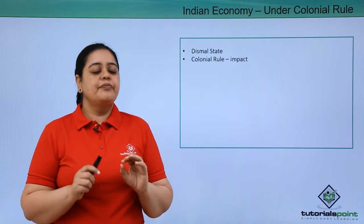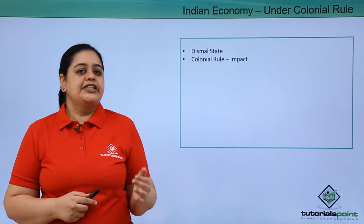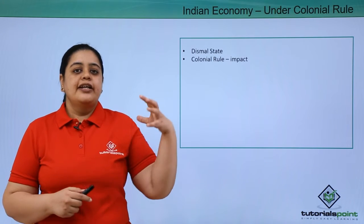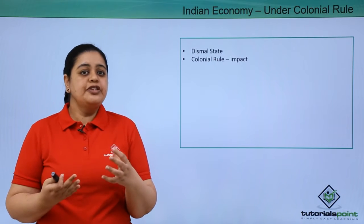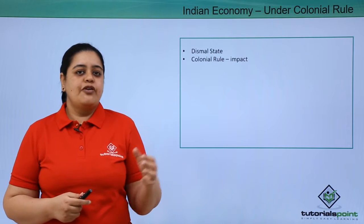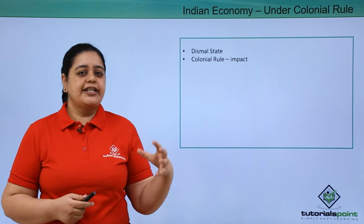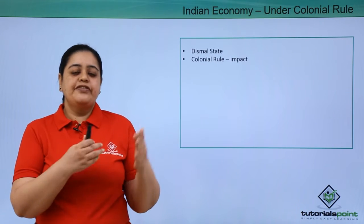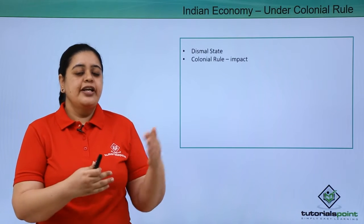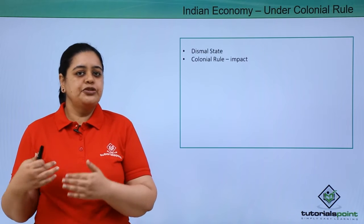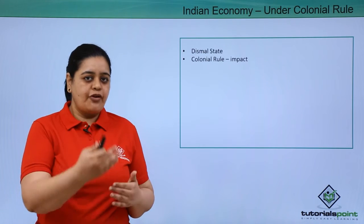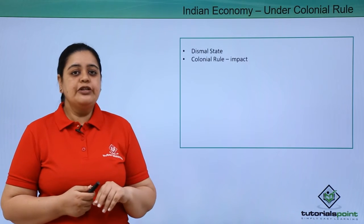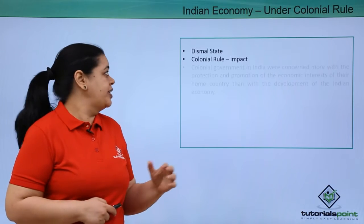The impact of colonial rule was purely because they wanted India to be a feeder economy. What they did was, they wanted us to produce raw materials for them. They would take that raw material and supply it to industries in Britain. Whatever goods those British industries prepared were then exported to India. So we exported raw materials and imported finished goods.